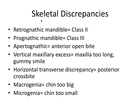For skeletal discrepancies, here are some key definitions for the board exam. A retrognathic mandible refers to a class two skeletal discrepancy. A prognathic mandible — one that sticks too far out — refers to a class three skeletal discrepancy. Apertognathic refers to a skeletal anterior open bite, from the word aperture meaning opening. Vertical maxillary excess means the maxilla has grown down too far, often resulting in a gummy smile. A horizontal transverse discrepancy is also known as a skeletal posterior crossbite.